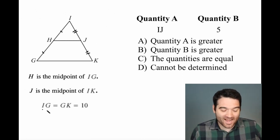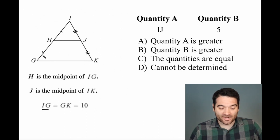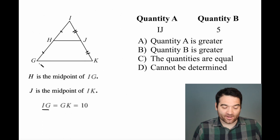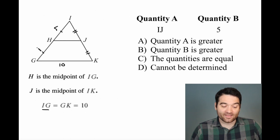right? We're told that IG, so this side of the triangle, equals GK, that side of the triangle, equals 10. So that means that this is equal to 10, and this is equal to 10, so that's going to be 5 and 5.